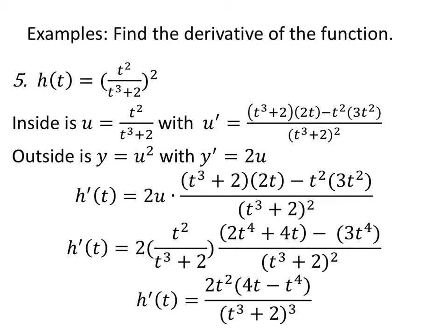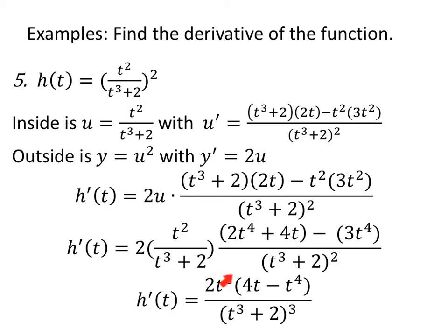Let's find the derivative of h of t, which is the quantity t squared over (t cubed plus 2), all squared. My inside is a quotient, so I use the quotient rule for the derivative of the inside. The outside is just something squared, so its derivative is 2 times something. The derivative of h of t is 2u times the quotient rule result. Replace u with what it equals. When I multiply completely, I'll have 2t squared in the numerator of the second piece, with negative t to the fourth and positive 4t. The denominator will have (t cubed plus 2) three times total.